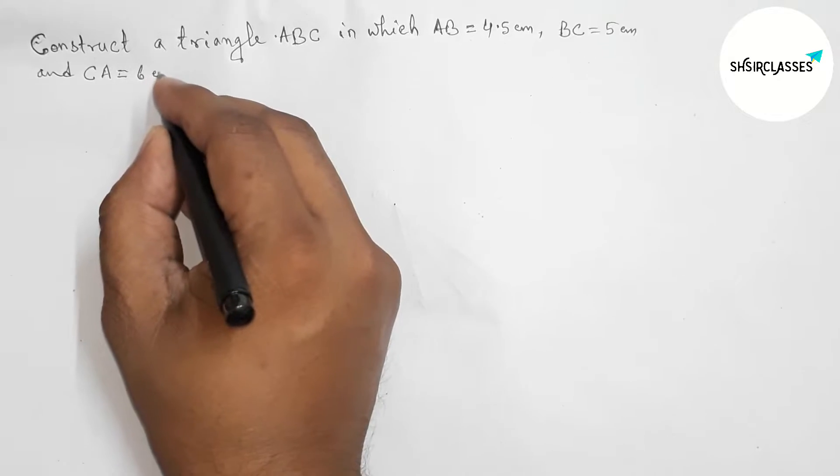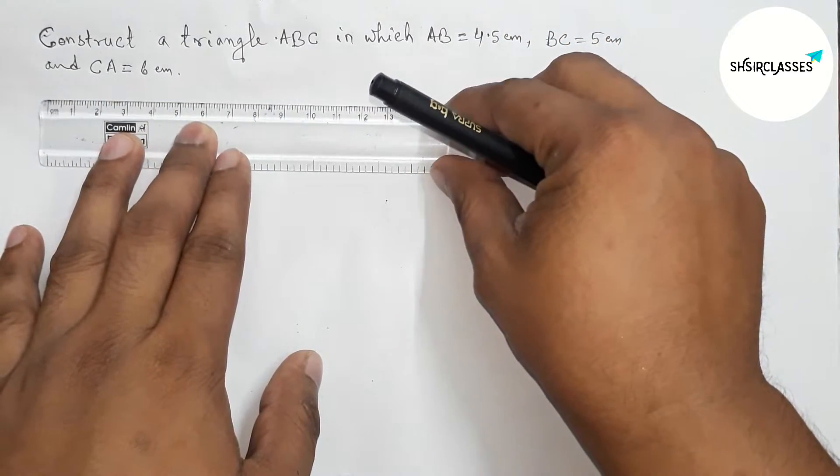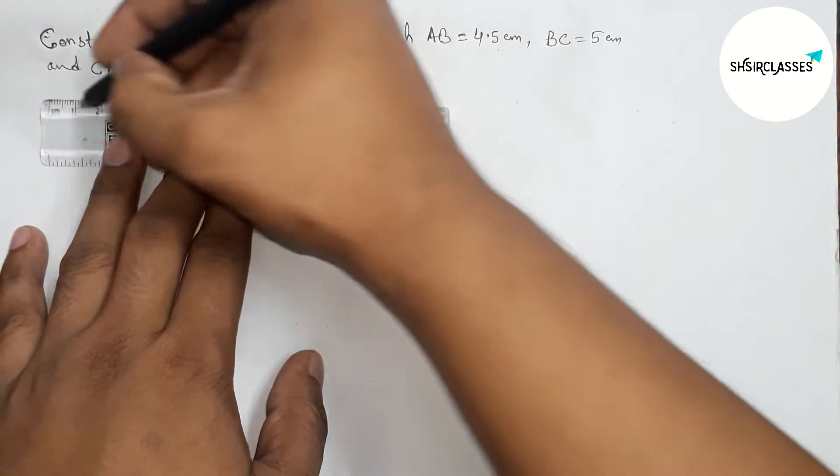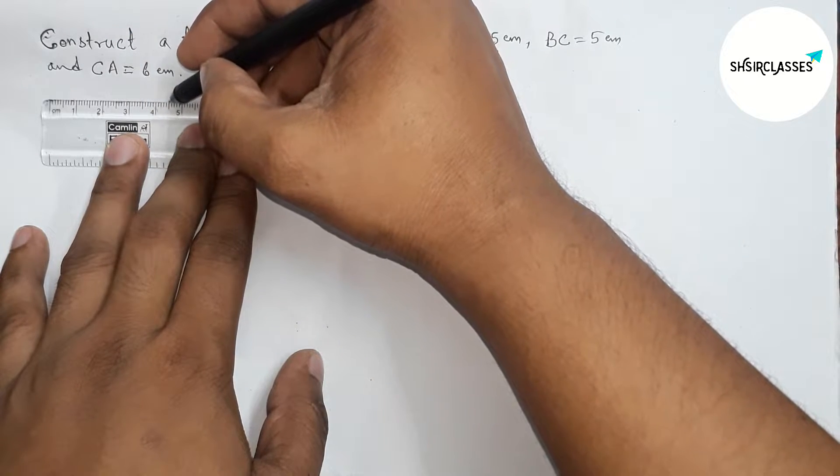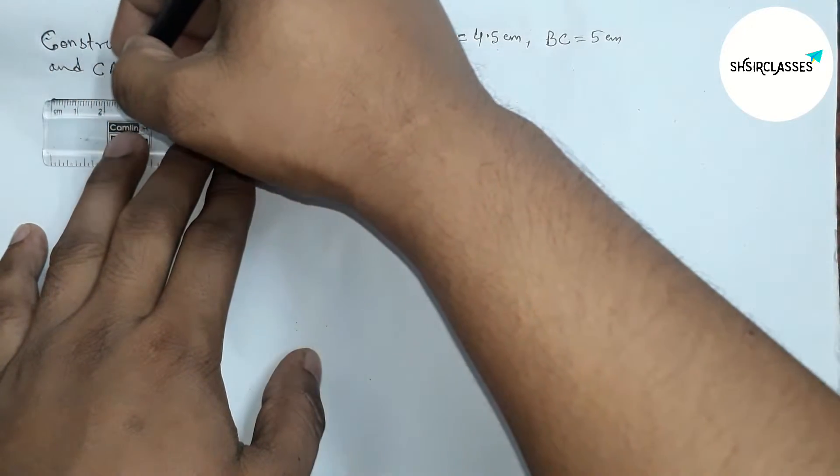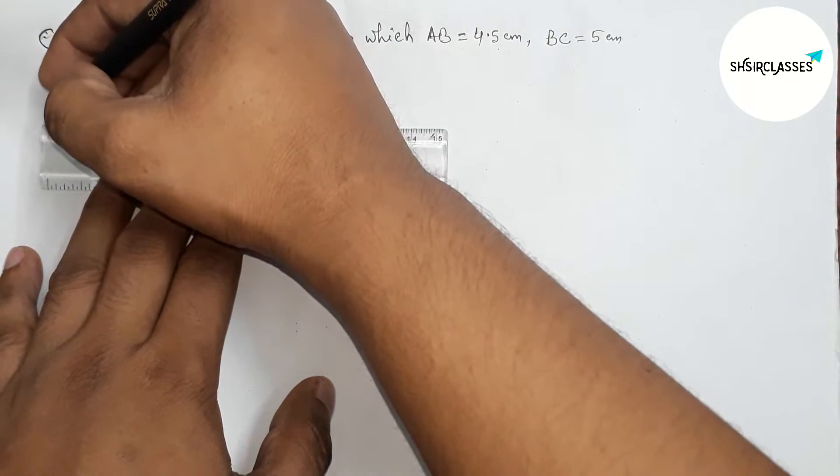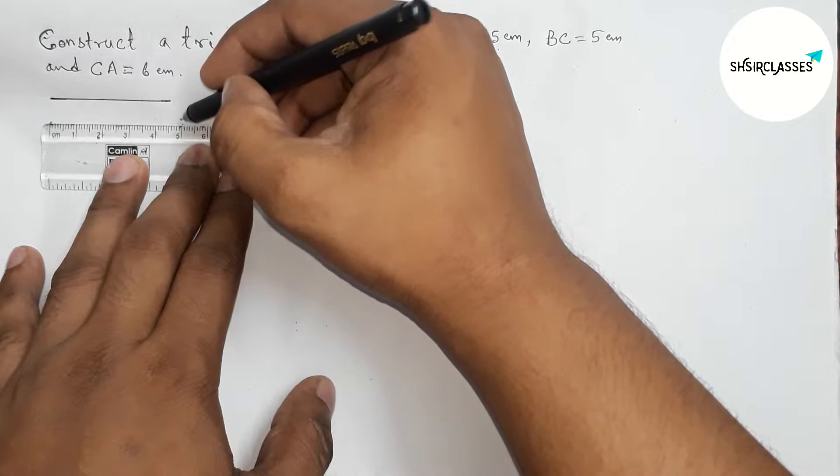Please watch the video till the end. So let's start the video. Okay, first of all, let us draw the three given sides. First, drawing a 4.5 centimeter line segment, then drawing a line segment of length 5 centimeters.